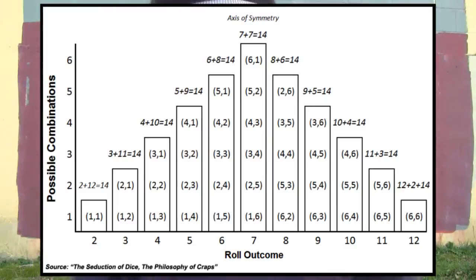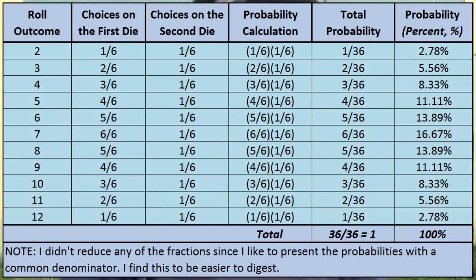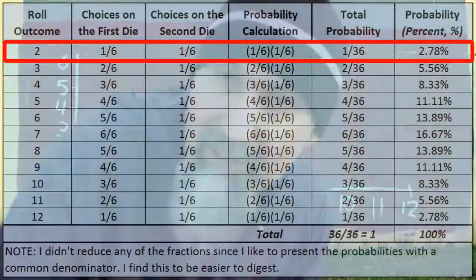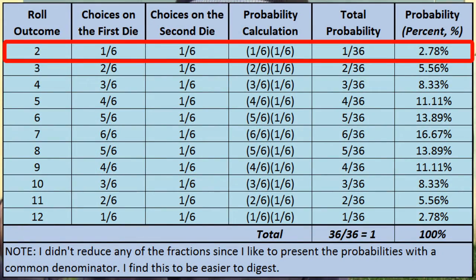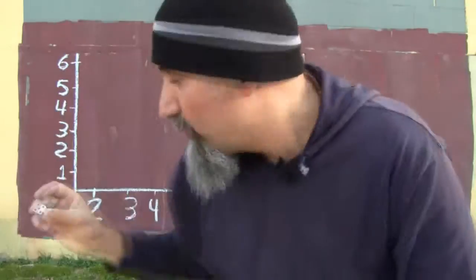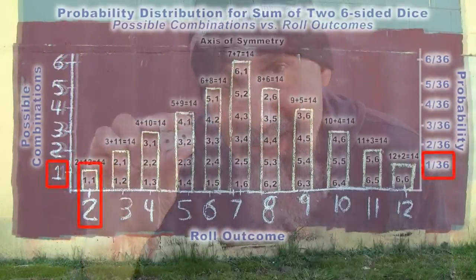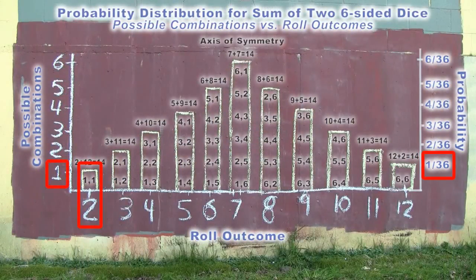For the number two, there's only one way you can get it: you need to get the number one on the first die and the number one on the second die. When it comes to probabilities like that, you multiply the two probabilities together. You need one out of six on the first die times one out of six for the second die, which gives us one out of 36. The probability of getting a two with two six-sided dice is one out of 36, and there's only one combination.